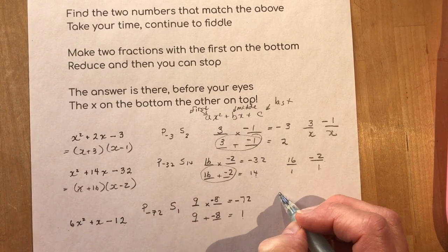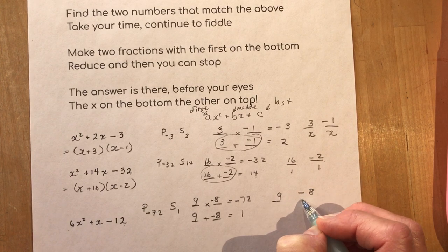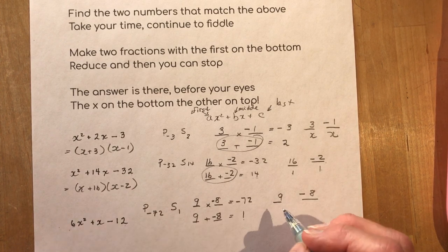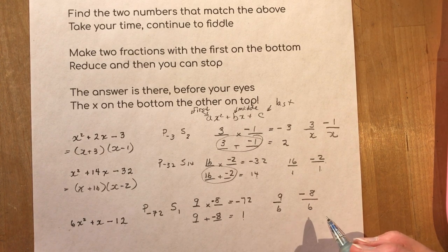So now I write up my two numbers. Nine and minus eight. Make two fractions with the first on the bottom. Where's your first? Right here. Six. Right? Six. Make two fractions with the first on the bottom.